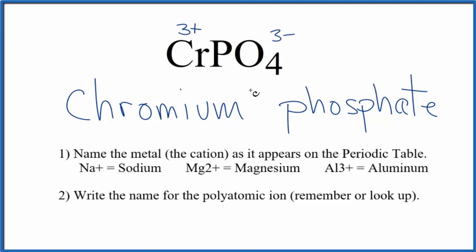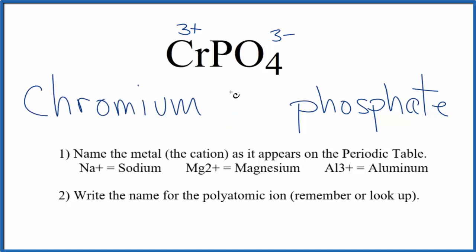So we're going to write Roman numeral 3 in parentheses between the chromium and the phosphate. The Roman numeral 3, that represents the charge, that 3 plus on the chromium here. So the name for CrPO₄ is chromium 3 phosphate.